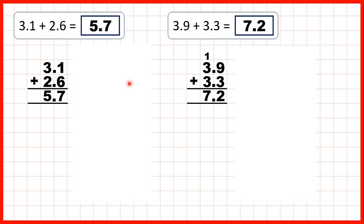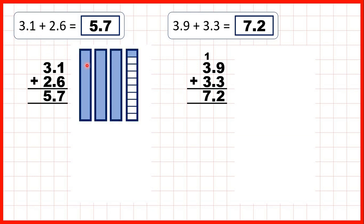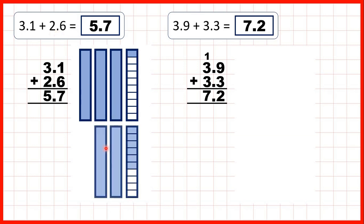To show what we did: first we had 3.1, so that's 3 wholes and 1 tenth, and we were adding 2.6, so that's 2 wholes and 6 tenths. We started by adding our tenths, and if we put our tenths together you can see that we now have 7 tenths, and the fraction bar is now empty so we can ignore it. Adding our whole numbers, we have 3 plus 2 which gave us 5.